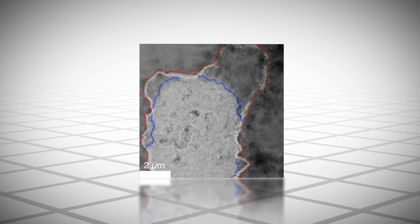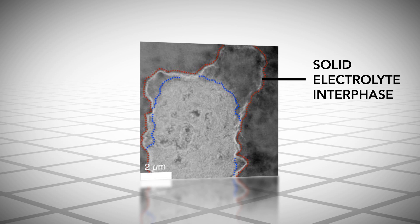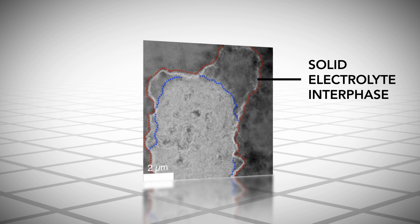But the coup de grace came from something called the solid electrolyte interface. This layer forms around the electrode and blocks the battery from taking a charge.